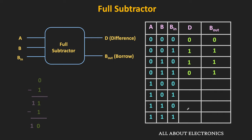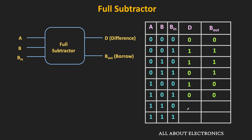Similarly, if we move to the next case, then 1 minus 1 is equal to 0. And then 1 minus 0 is also equal to 1 — meaning in the fifth row, the difference output is equal to 1 while the borrow is equal to 0. Likewise in the sixth row, 1 minus 0 is equal to 1 while 1 minus 1 is equal to 0 — that means both difference and borrow outputs are 0. Similarly for the next case, 1 minus 1 is 0 while 0 minus 0 is 0 — meaning in the seventh row, difference and borrow outputs are also 0. Likewise in the last row, 1 minus 1 is 0 and 0 minus 1 is 1 with a borrow — so both difference and borrow outputs are 1. So in this way, we got our truth table for this full subtractor.